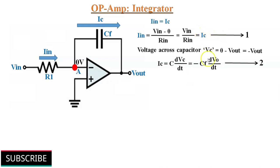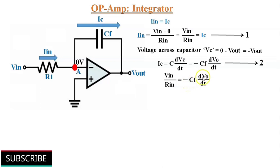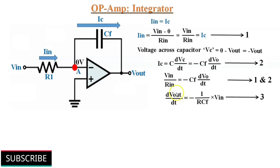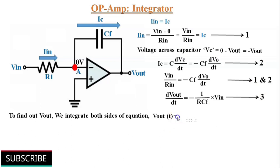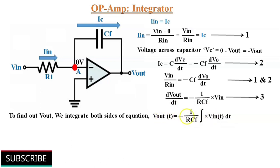Now, from equations 1 and 2, we can write Vin/Rin equals minus Cf multiplied by dVo/dt. Or, we can write dVout/dt equals minus 1 divided by RCf into Vin. This is equation 3. To find the output voltage, we integrate both sides of equation 3 with respect to t: Vout equals minus 1 divided by RCf times the integration of Vin dt. This equation shows the output is the integral of input with an inversion and scale multiplier 1/RCf, where RCf represents the integration time of the integrator circuit.